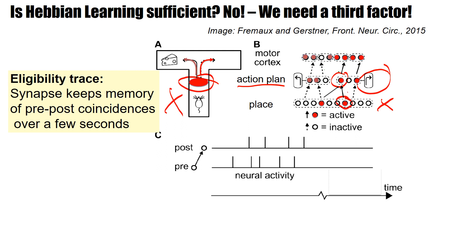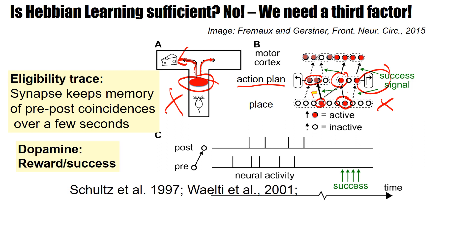Later the mouse will again be at the same location and this time it decides to go left. Now it's a different combination of active neurons — the same set of place cells but different active neurons — which are again marked by an eligibility trace. This time there is indeed a success signal. The success signal is broadly distributed across the whole network and comes with a delay of one second, because the rat has to move towards the Swiss cheese and it likes the Swiss cheese. It acts as a reward signal, a success signal. In this case you now have a transformation of the eligibility trace into an actual weight change.